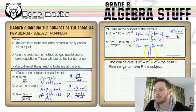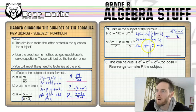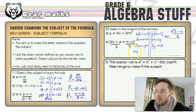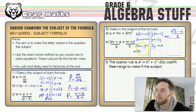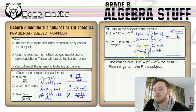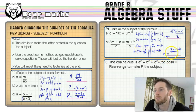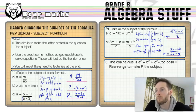We're just rearranging everything — hence the title: rearranging or changing the subject of the formula. Now I need to factorize to get m on its own again. So m times (3b minus g) equals 2g minus ab. Then divide by (3b minus g), leaving m completely on its own: m equals (2g minus ab) all divided by (3b minus g). Complicated looking, yes, but take it one step at a time.